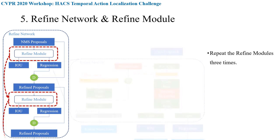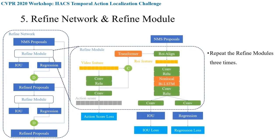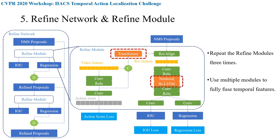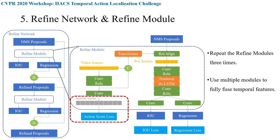To design a practical refine module, we tried various methods to fuse input features. Considering that BMN does not have many operations to fuse temporal features, we add Transformer, non-local, and LSDM to the refine module to fuse features in the temporal dimension. We also refer to the PSN and add a prediction of whether there is an action at each time point, which we call action score.